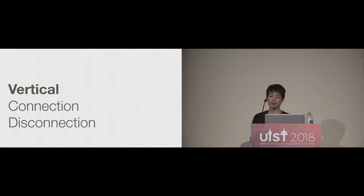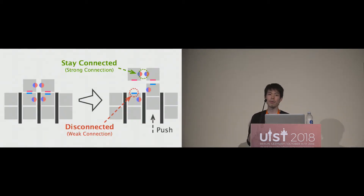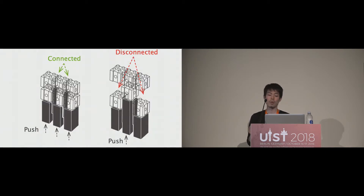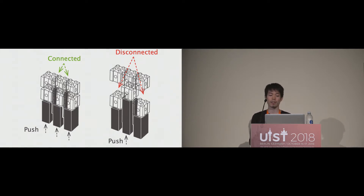For vertical connection, we use a disk magnet attached to both the top and bottom of the blocks. By default, the blocks connect in the vertical direction with the attached disk magnets. However, when pushed, the connection can be detached, as the magnetic connection in the vertical direction is weaker than horizontal ones. So if we push only one block, the vertically connected block can be detached while maintaining the horizontal connection with stronger magnetic force, which allows overhanging structures.